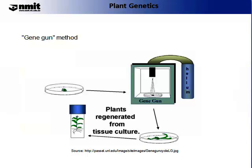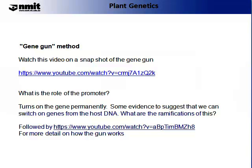One of the most risky parts of this procedure is actually taking the plant from the sterile tissue culture climate into a more general climate. This is often where plants can fail. I have found two YouTube videos which give you a visual representation of how the GeneGun works. Please stop the video here and click on the links below to see these videos.